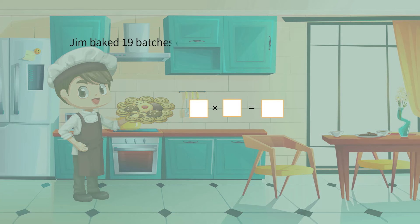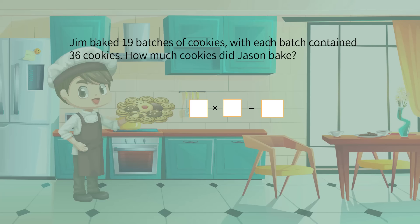Again, we need to find the relationship between numbers to find the factors. What we need to find is the total number of cookies, as it is the product of the number of batches and the number of cookies in each batch. Thus, we find 19 and 36 as factors.